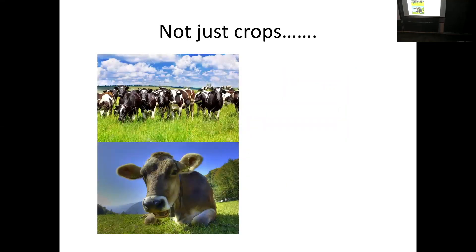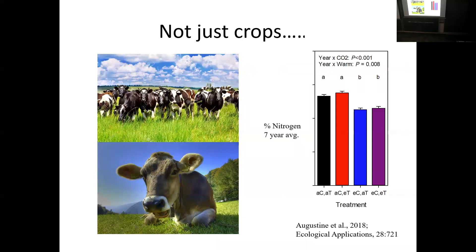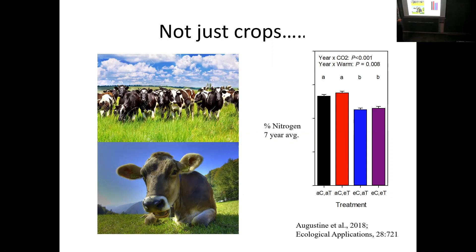It's not just crops. This is some work by Augustine et al. — a seven-year average looking at pasture grass. Under ambient CO2 and ambient temperature versus elevated CO2 and elevated temperature combinations over a seven-year period, temperature per se did not have any effect on protein concentration, but CO2 did. Carbon dioxide reduced the protein — as measured by nitrogen — by 5%. As a result of that change, cows put on weight slower. So it's not just an effect in terms of plants that you eat, but also an effect in terms of meat that you consume.